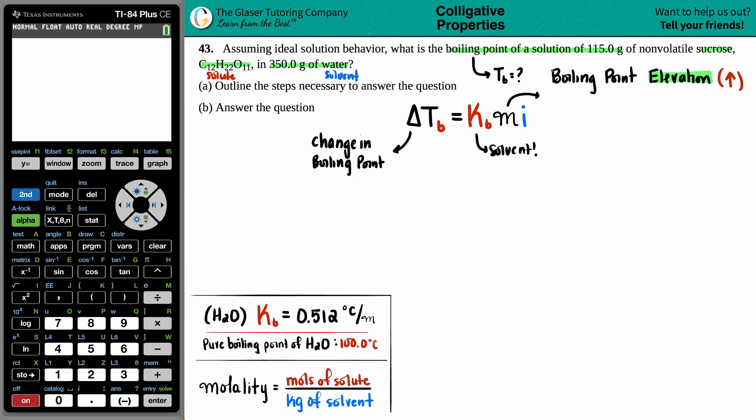The M is molality, so we're probably going to have to find that out. The i value is the Van't Hoff factor, which we will get into. We need to outline the steps. We want to find the change in boiling point. We already have the KB value. Step one is to find or solve for molality.